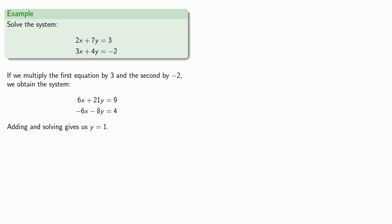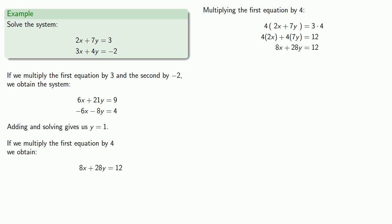The first time, we multiplied by the coefficients on x. Now let's multiply by the coefficients on y. We take the first equation and multiply it by the coefficient on y in the other equation, which is 4. That gives us 8x + 28y = 12.